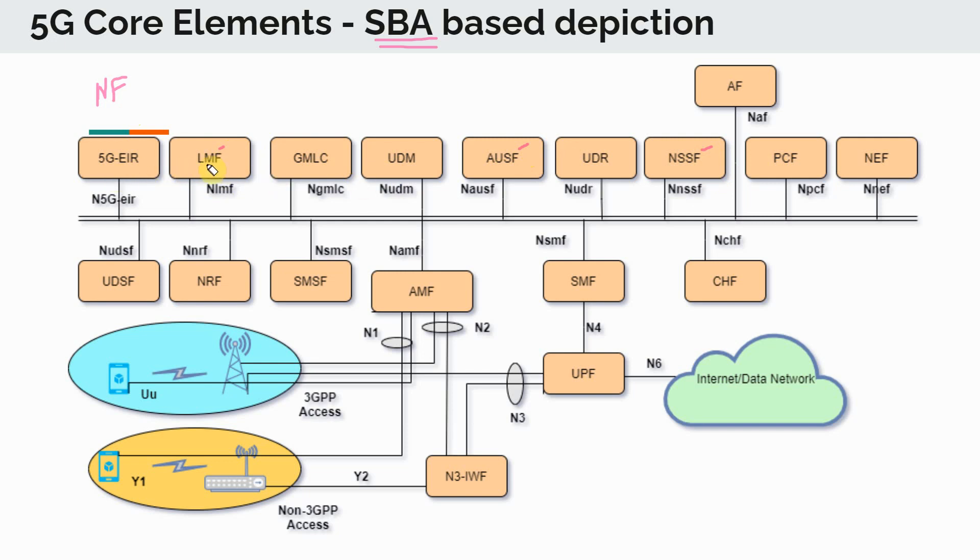So as an example, LMF is location management function. And we will go through all the others. But just keep in mind right now that in the service based architecture, you have these different network functions, many of them who interact with each other using APIs or access point interfaces.